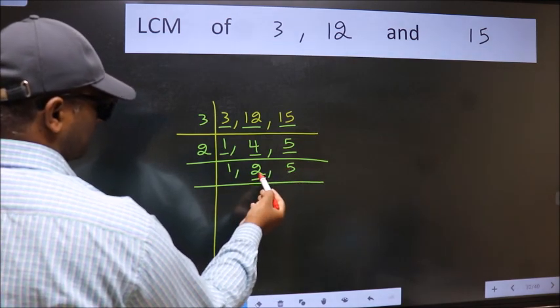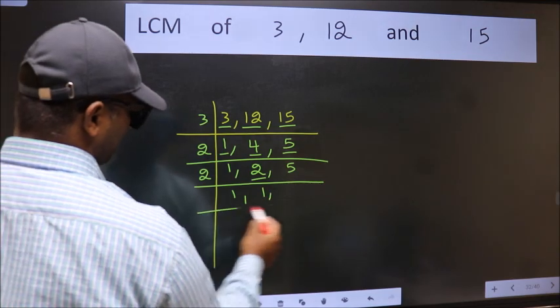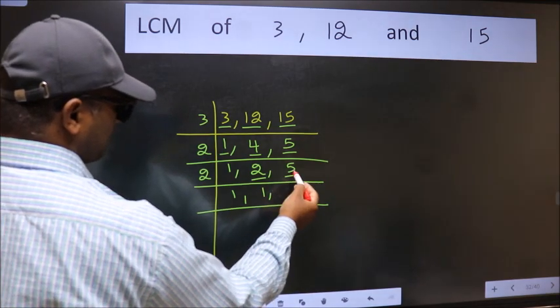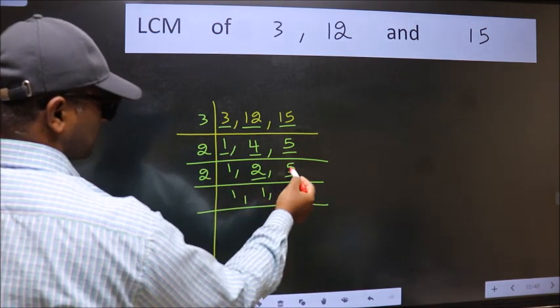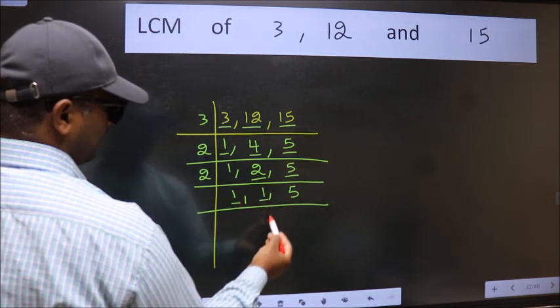Now here we have 2. 2 is a prime number. So 2, 1 is 2. The other number 5 not divisible by 2. So we write it down as it is. Now we got 1 here and here.